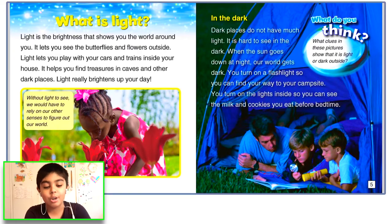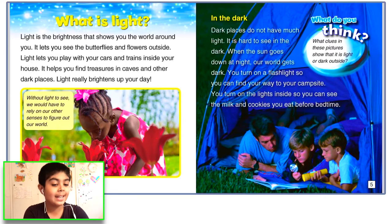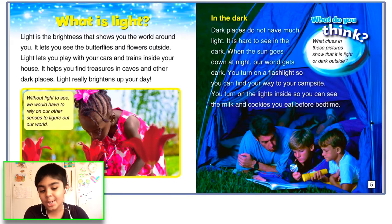In the dark. Dark places do not have light. It is hard to see in the dark. When the sun goes down at night, our world gets dark. You turn on a flashlight so you can find your way to your campsite. You turn on the lights inside so you can see the milk and cookies you eat before bedtime.